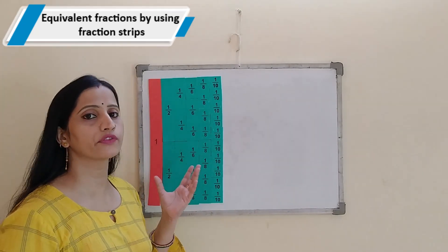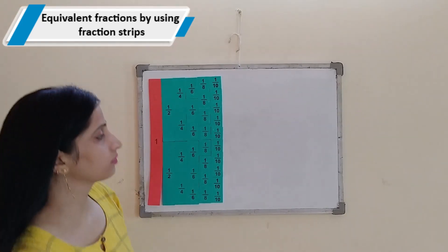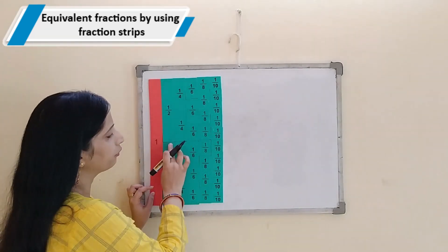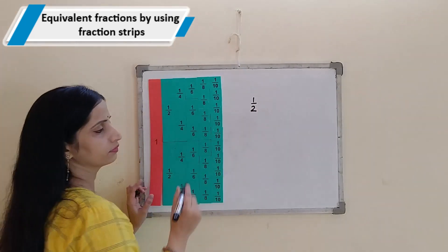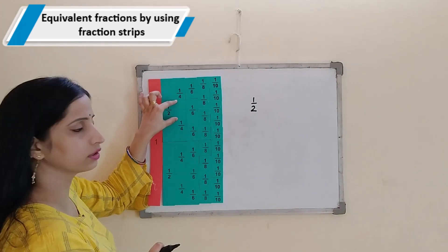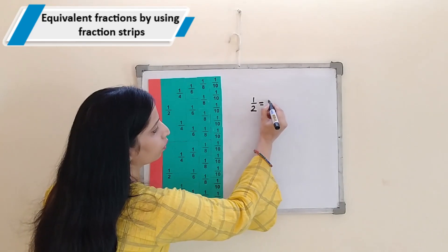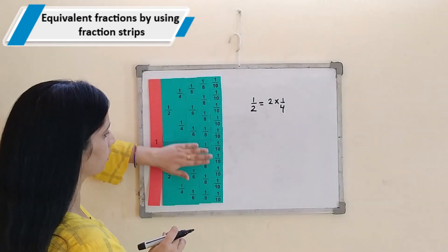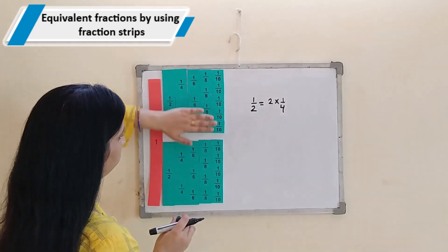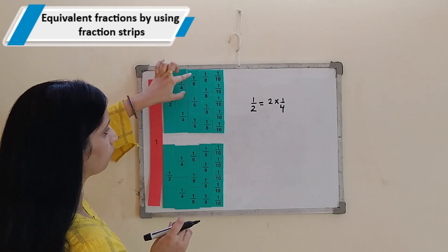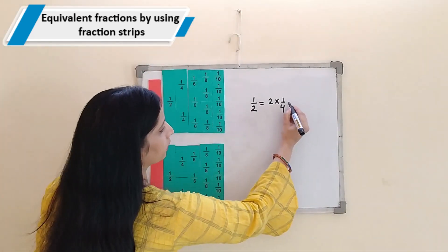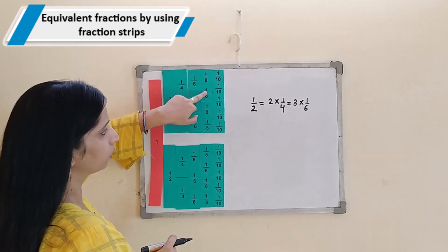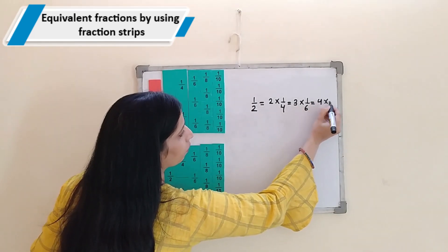So now we will find the equivalent fractions using these strips. How to find out the equivalent fraction by using these strips? This half is formed by 2 one-fourths — 1 and 2. So 2 one-fourths are forming a half. And these are equal to how many one-sixths? This half is equal to 3 one-sixths. And this is equal to 4 one-eighths.